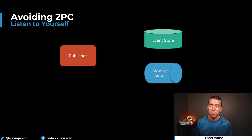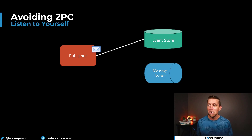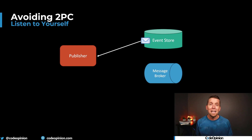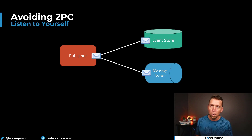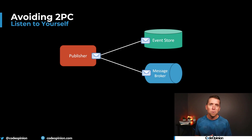Here's another example where the listen-to-yourself pattern actually makes sense: event sourcing. We have a publisher that needs to make a state change — that state change is in the form of an event being persisted to our event store, which is the point of truth. We persist that event, and then our event store has subscription capabilities. We can consume the same event we've just appended to our event stream, do some type of translation, and then publish that event for other service boundaries and other services to consume — whether that's a message broker or something like Kafka. Our event store is the point of truth, we're listening to ourselves via a subscription, and then we translate and publish to an external broker.